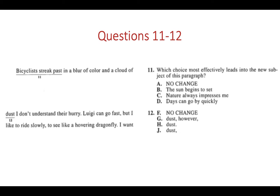Question 11: 'Bicyclists streak past in a blur of color and a cloud of dust.' Which choice most effectively leads into the new subject of this paragraph? 'The sun begins to set' is not about the subject. 'I don't understand their hurry' doesn't make sense without bicyclists established first. You really need 'bicyclists' because that's what the paragraph is about, and replacing it with something else would create ambiguity and lack clarity.